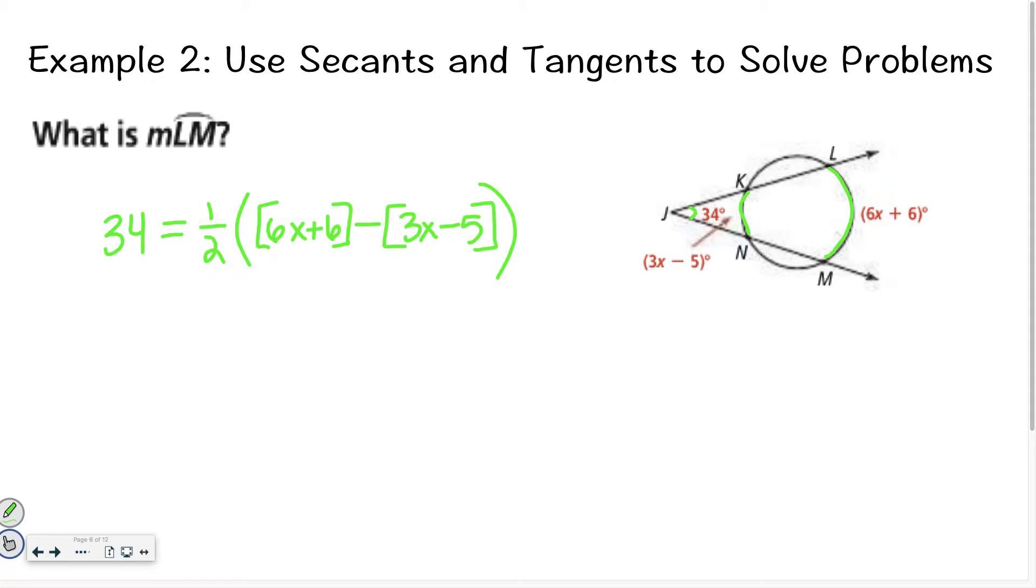The first thing I am going to do is I'm going to move that one half over. Multiplying by one half, to undo that, I can multiply by 2. So this becomes 68 equals, and then I have 6x plus 6 minus 3x minus 5. Now what I'm going to do is I'm going to say 6x minus 3x, that means I have 3x left. I'm going to say 6 minus negative 5. Minus a negative 5 becomes a plus. So I have 68 equals 3x plus 5.